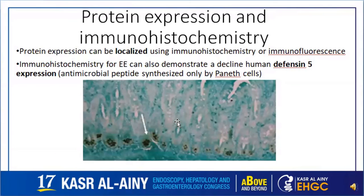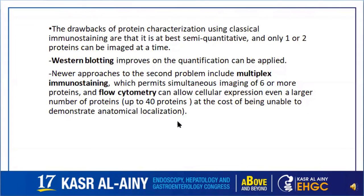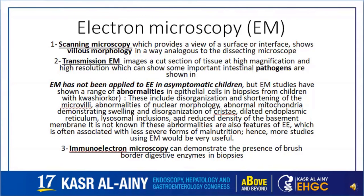This can be further highlighted by immunohistochemistry, showing a decrease in human defensin-5 expression, a peptide produced exclusively by Paneth cells. Immunohistochemistry is also superior to routine H&E histology in correlating with nutritional status, as worsening nutritional status produces consistent immunohistochemical changes. A better quantification of multiple antigens can be achieved by Western blotting and multiplexed immunostaining. Electron microscopy is of limited value; scanning microscopy provides a view of surface villus changes analogous to dissecting microscopes, while transmission microscopy generates high-magnification sections in which some important pathogens may be illustrated.